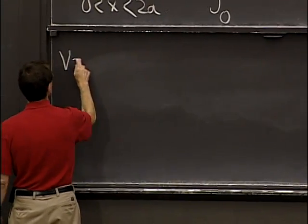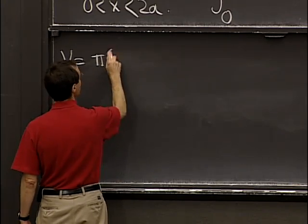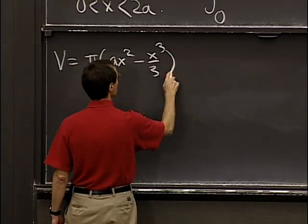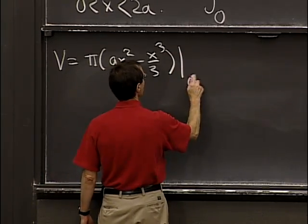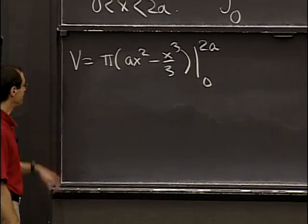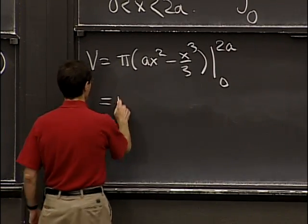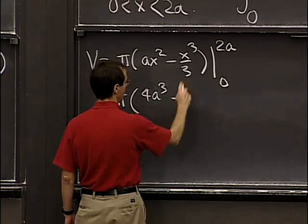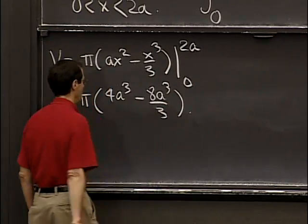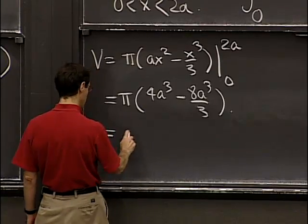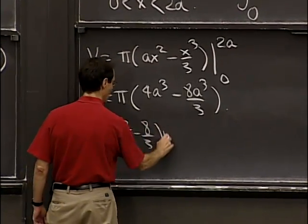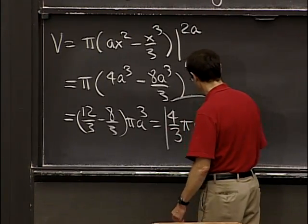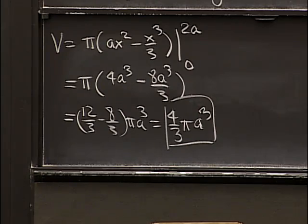Let's finish it off. The volume is π times the antiderivative: π[ax² - x³/3] evaluated from 0 to 2a. That equals π times [a(4a²) - 8a³/3] = π[4a³ - 8a³/3] = π[12a³/3 - 8a³/3] = (4/3)π a³. So it worked — we got the correct formula for the volume of a sphere.